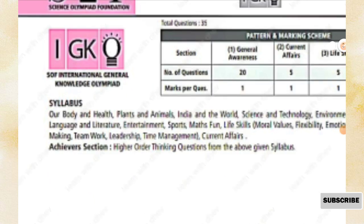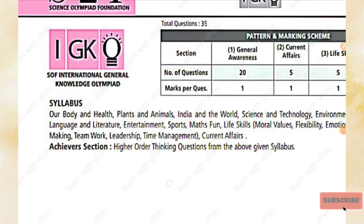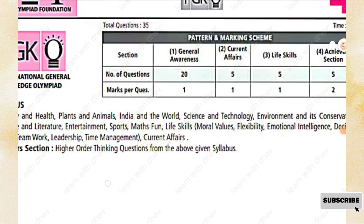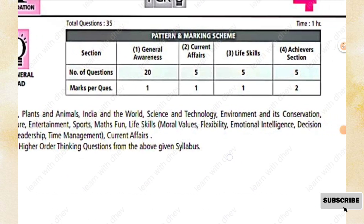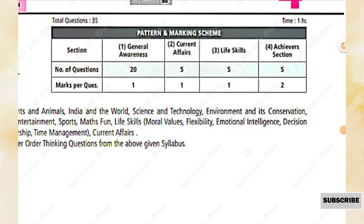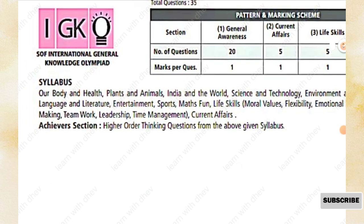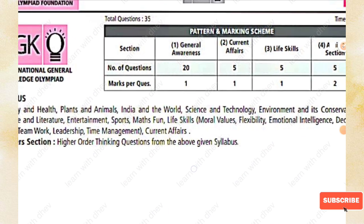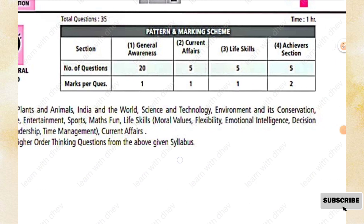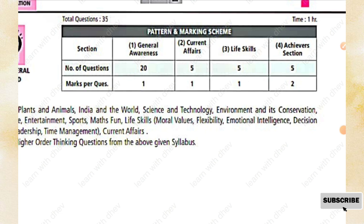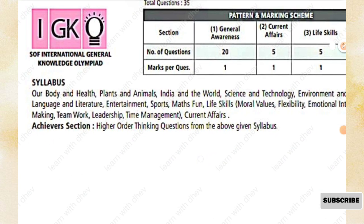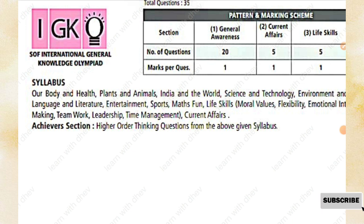The syllabus of this paper covers: our body and health, plants and animals, India and the world, science and technology, environment and its conservation, language and literature, entertainment, sports, life skills including moral values, flexibility, emotional intelligence, decision making, teamwork, leadership, time management, and current affairs. In the Achiever Section, higher order thinking questions are from the above given syllabus.